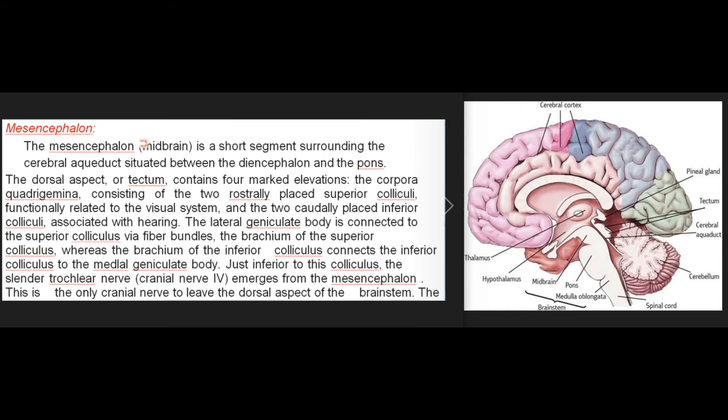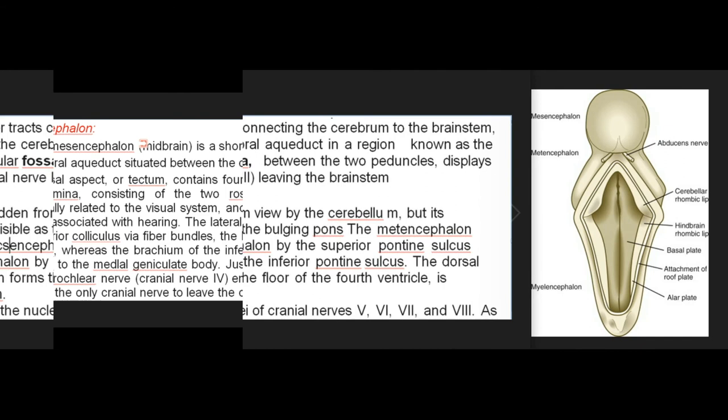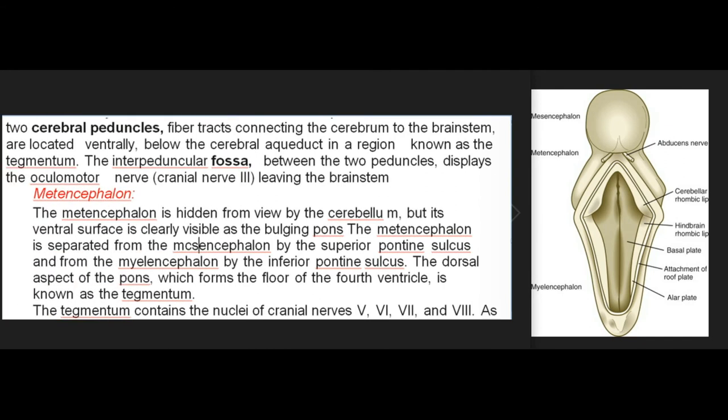The mesencephalon (midbrain) is a short segment surrounding the cerebral aqueduct, situated between the diencephalon and the pons. Its dorsal aspect or tectum contains four marked elevations — the corpora quadrigemina — consisting of the two rostrally placed superior colliculi (functionally related to the visual system) and the two caudally placed inferior colliculi (associated with hearing). The lateral geniculate body is connected to the superior colliculus via the brachium of the superior colliculus, whereas the brachium of the inferior colliculus connects the inferior colliculus to the medial geniculate body. The slender trochlear nerve (cranial nerve 4) emerges from the mesencephalon just inferior to the inferior colliculus — the only cranial nerve to leave the dorsal aspect of the brainstem. The two cerebral peduncles, fiber tracks connecting the cerebrum to the brainstem, are located ventrally in a region known as the tegmentum. The interpeduncular fossa between the two peduncles displays the oculomotor nerve (cranial nerve 3) leaving the brainstem.